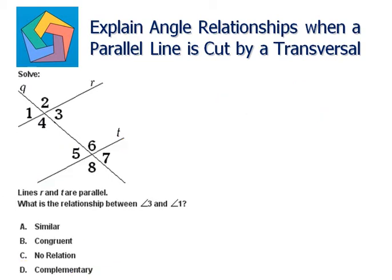Next problem solve: lines R and T are parallel. What is the relationship between angle 3 and angle 1? This is angle 3 and this is angle 1. This is line R and this is the transversal Q.